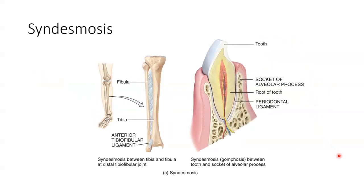A syndesmosis is a fibrous joint in which there is a greater distance between the articulating surfaces, so those two bones, and more dense irregular connective tissue surrounds the joint than in a suture. The connective tissue is typically arranged as a bundle in the form of a ligament, which limits the amount of movement at that joint.